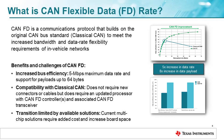CAN flexible data rate, referred to as CAN-FD, allows for increased bus efficiency, providing data rates up to 5 megabits per second, while also increasing the payload size to 64 bytes. CAN-FD does not require new connectors or cables, but does require an updated processor with a CAN-FD controller and associated CAN-FD transceiver.